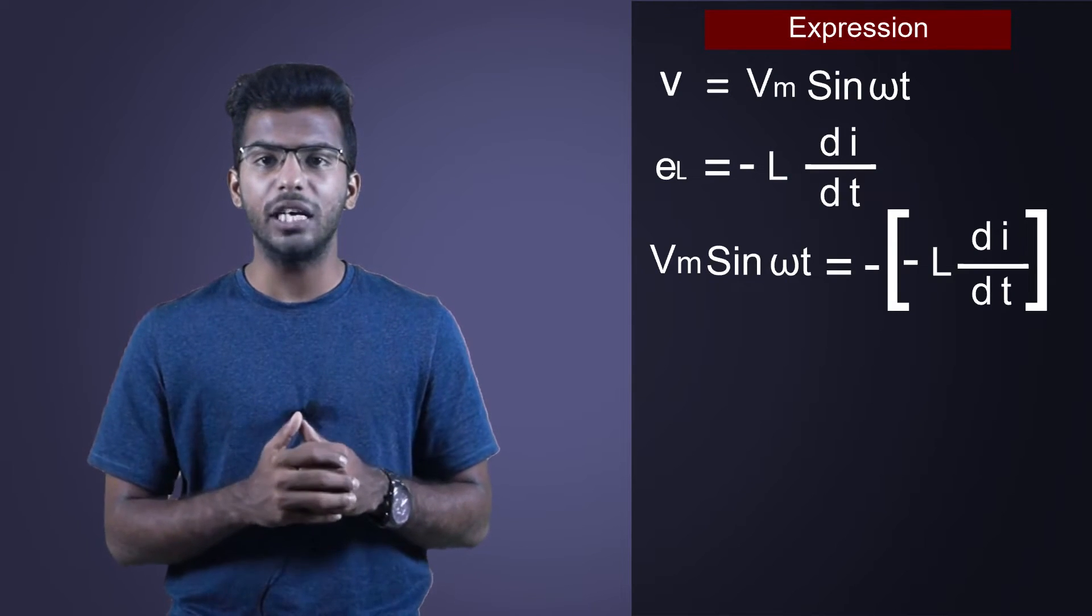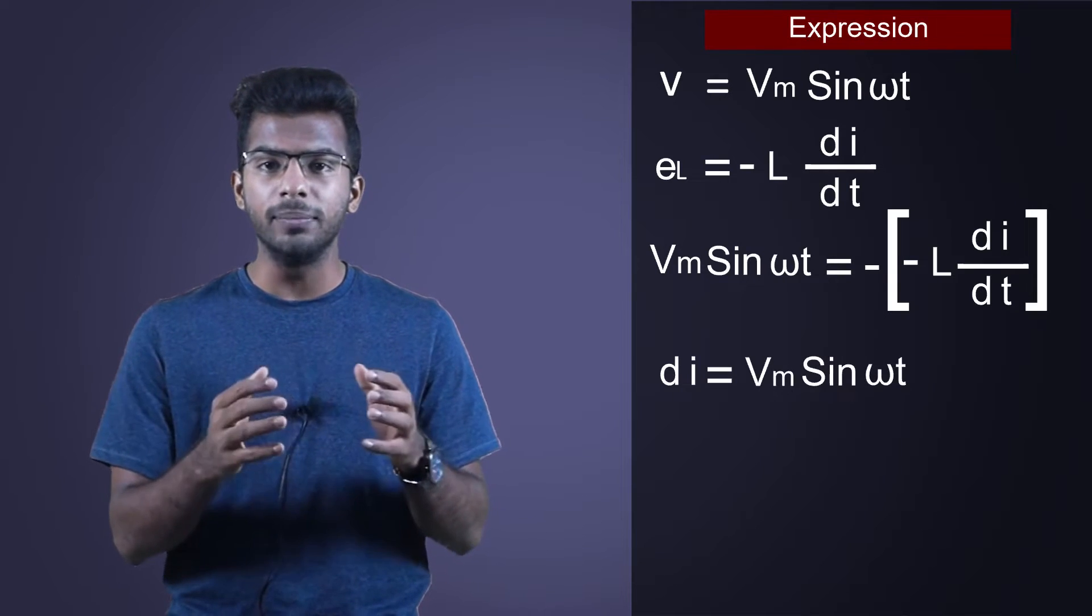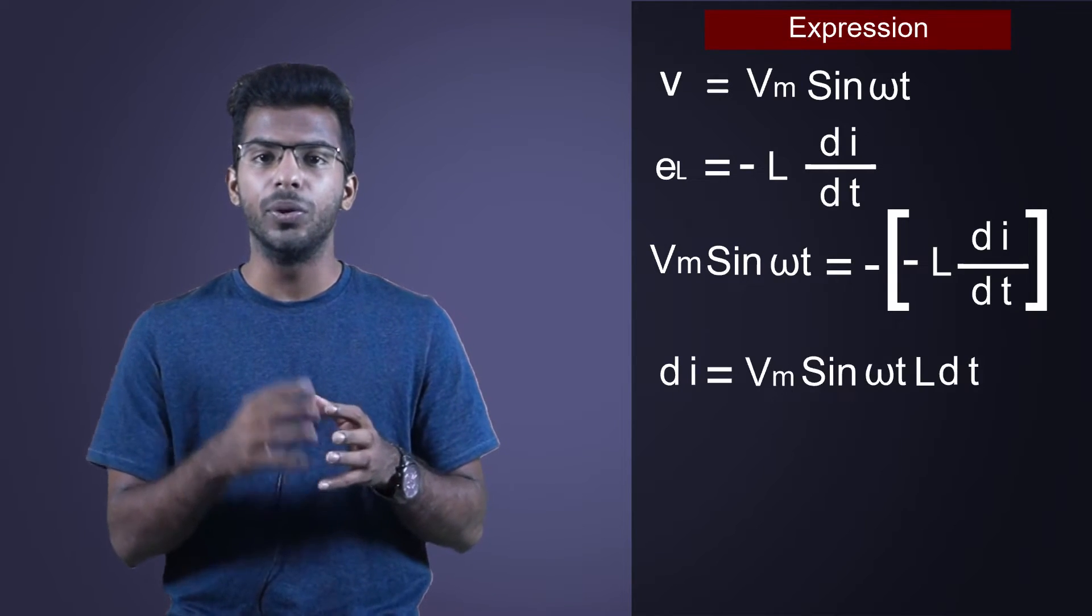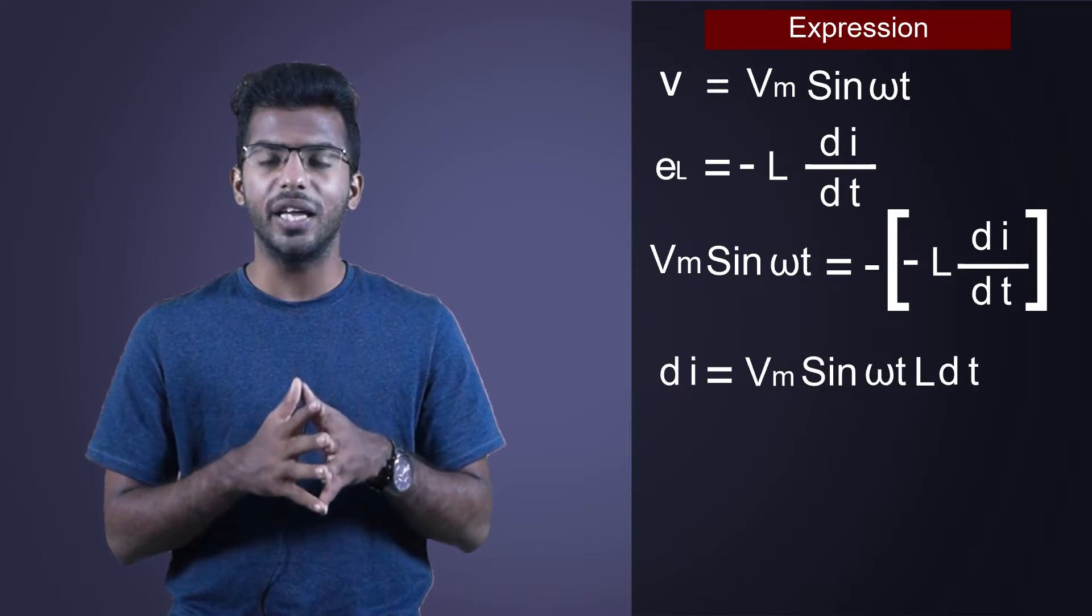We will solve this equation for current. So di will be equal to Vm sin omega t into L into dt. We have just rearranged the terms.